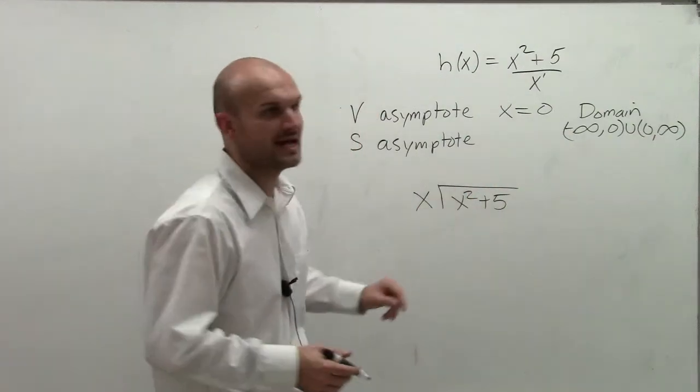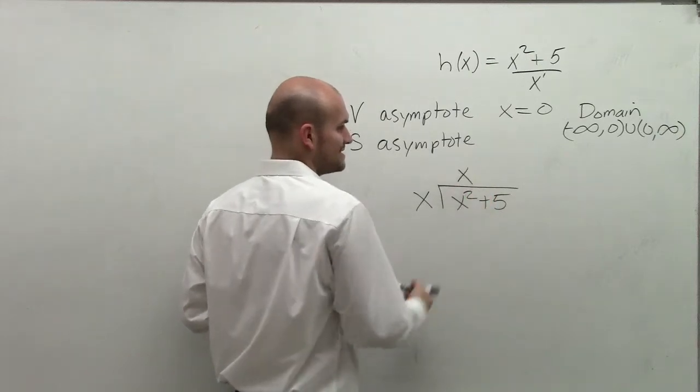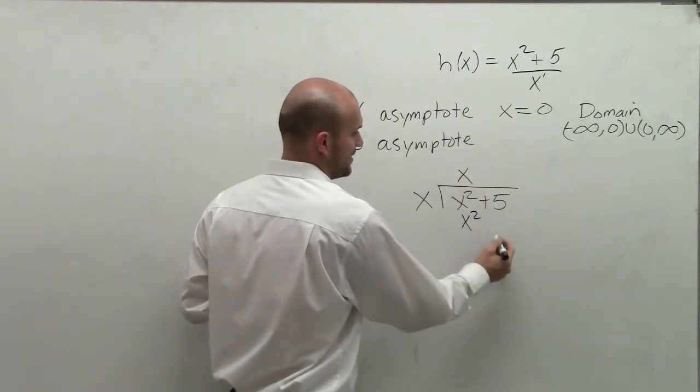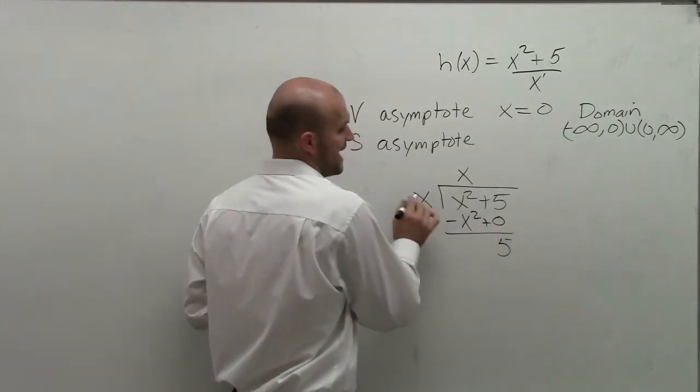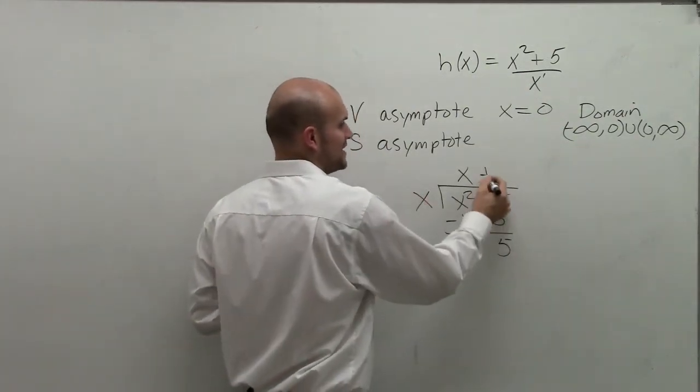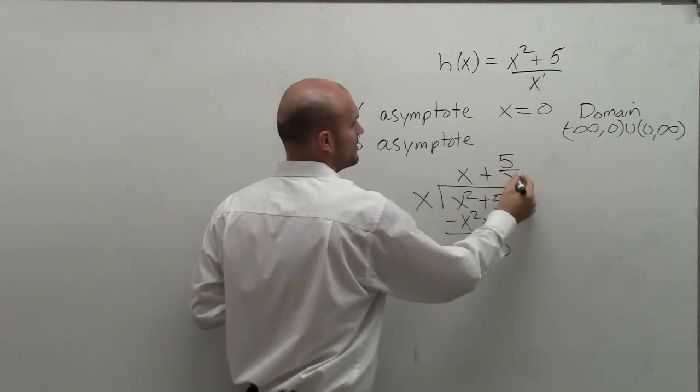So x goes into x squared, x times. x times x is x squared. Then, subtract the rows, I get 5. x does not divide into 5, so therefore, 5 is going to be my remainder.